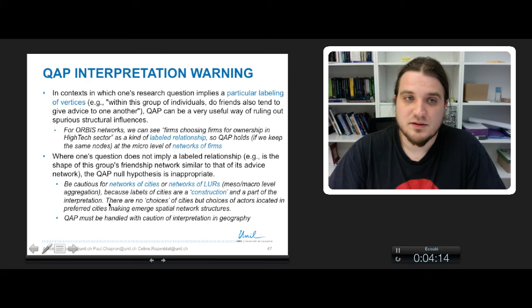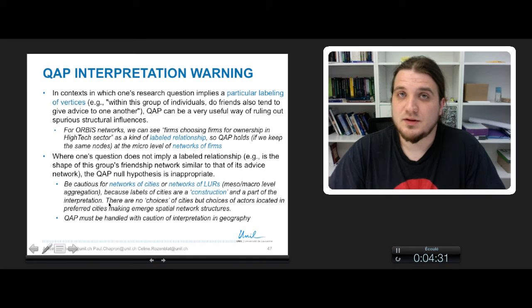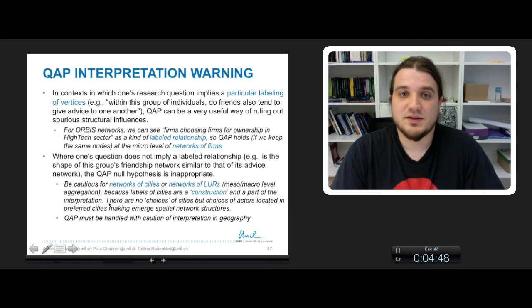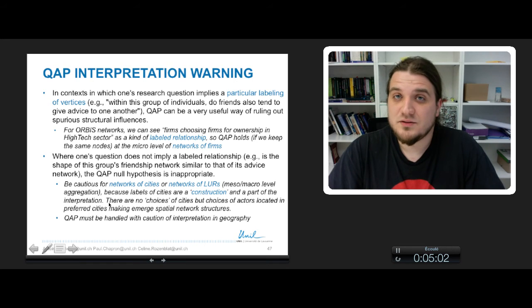But when the relation is not any more labeled, so when you wonder about the shape of a group friendship and the shape of a group advice network, the QAP null hypothesis is inappropriate. So in our case, when we consider a network of cities, a QAP test can still be applied because we construct the network of cities by saying that, of course, a city does not choose a city to have some firm ownership links between, for example, Paris and Rome. But inside Paris, there are some firms that have chosen to interact with some other firms in Rome, and they chose the firms in Rome partly because they were in Rome.